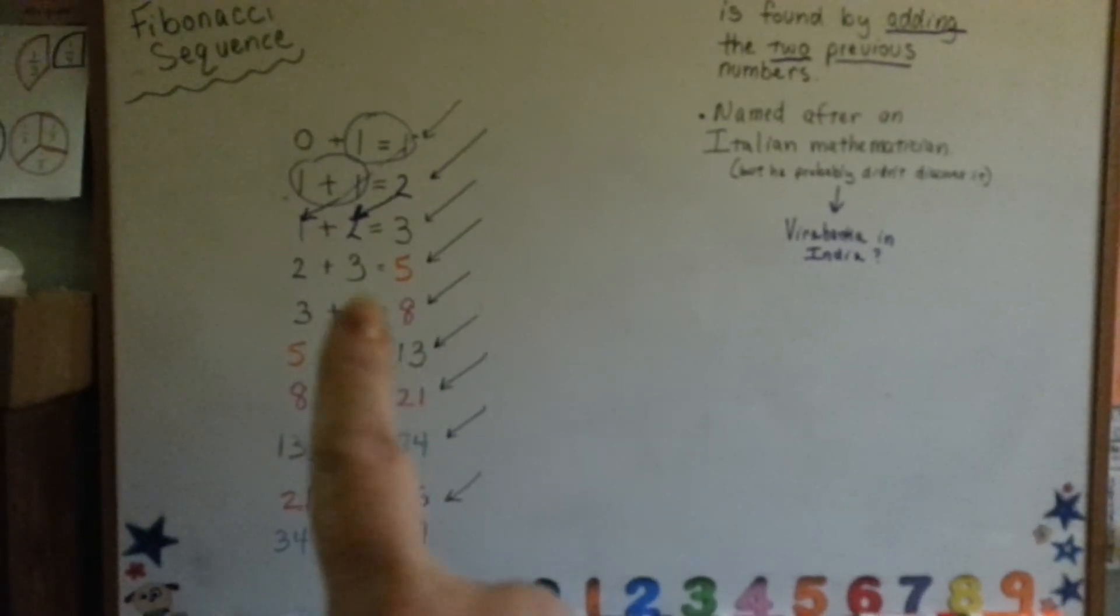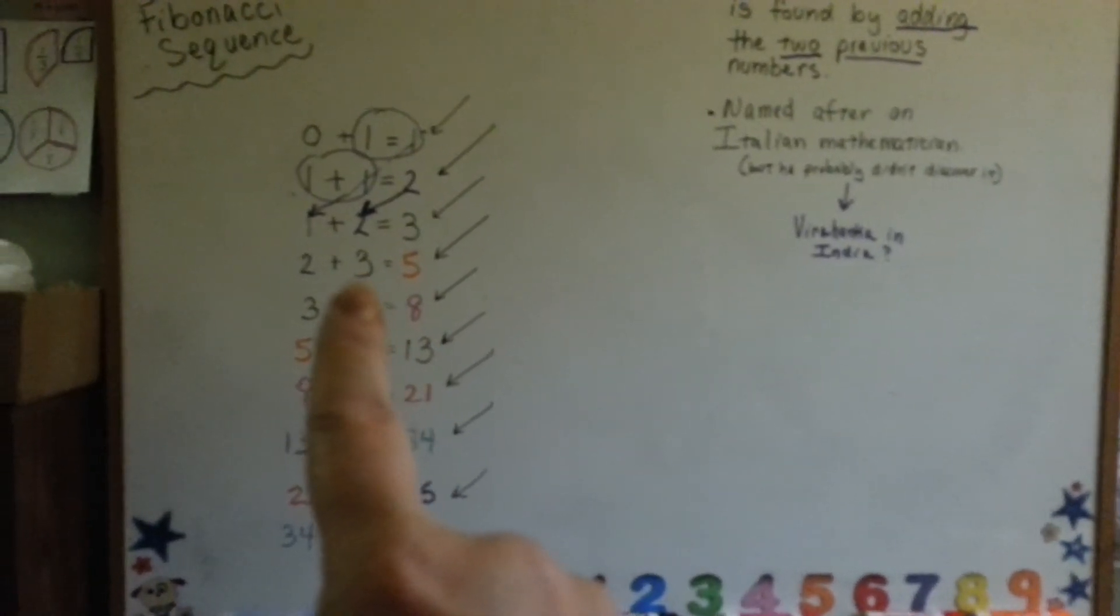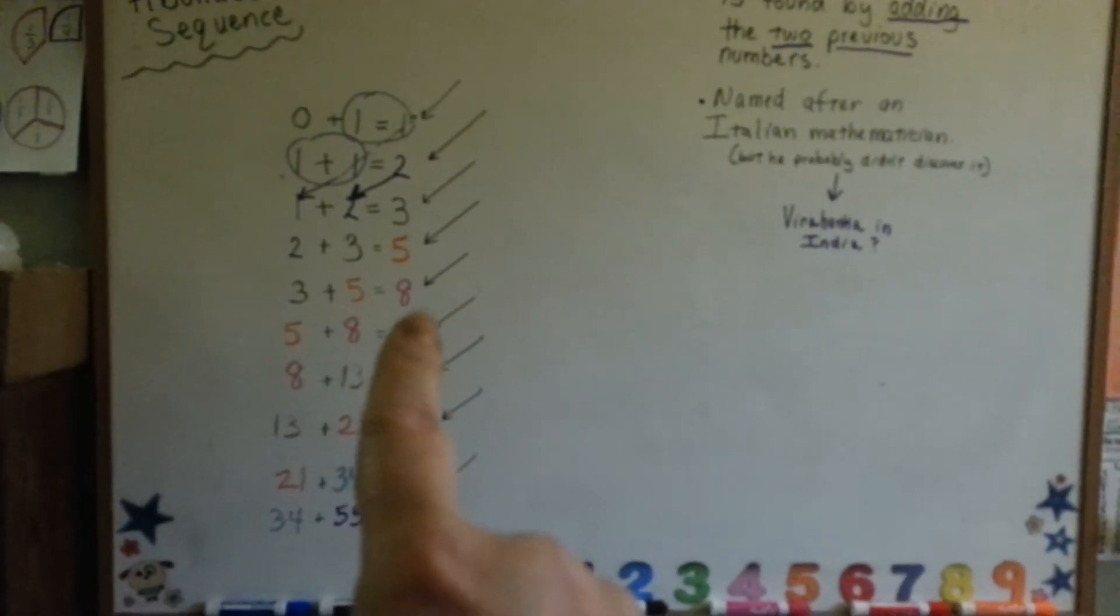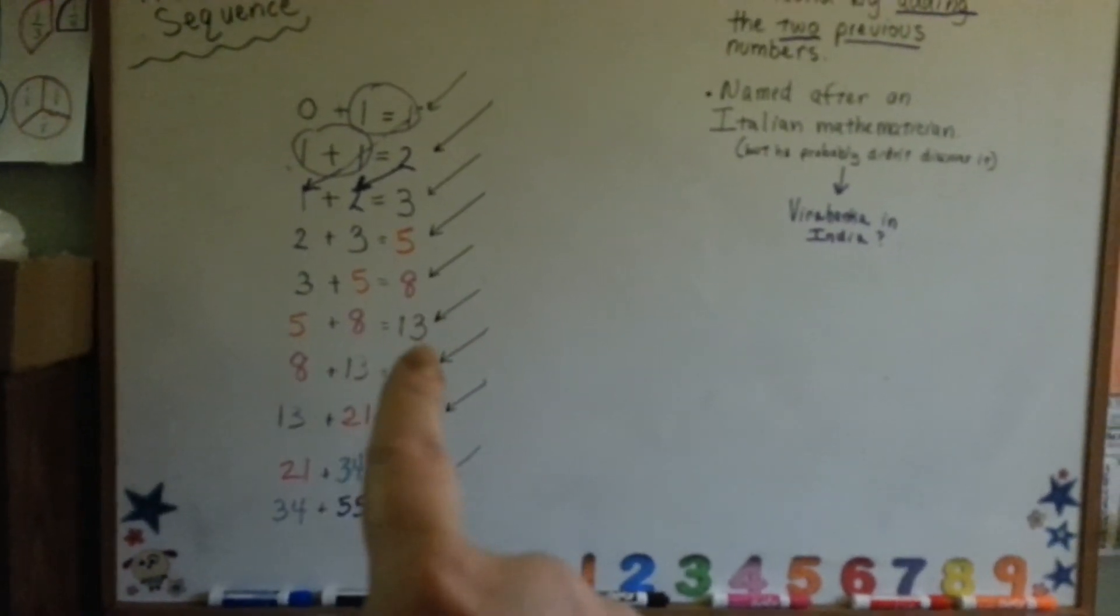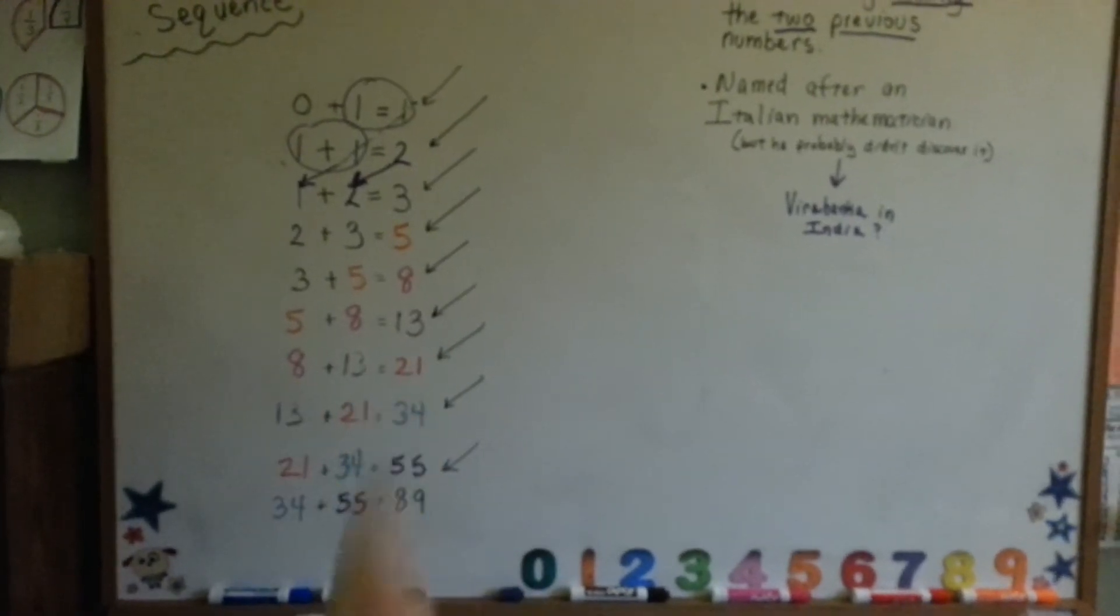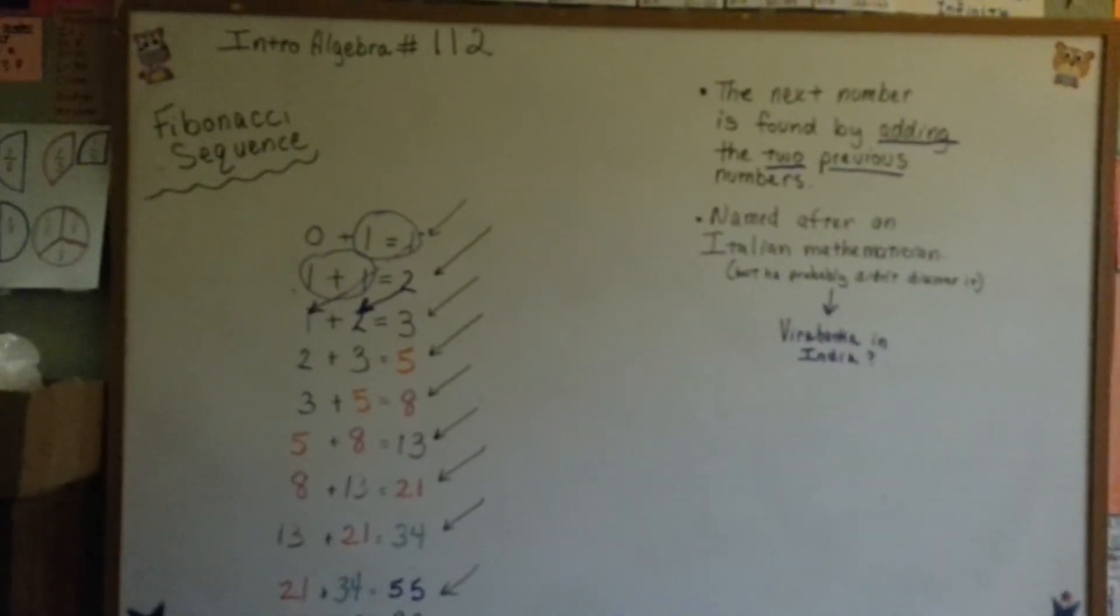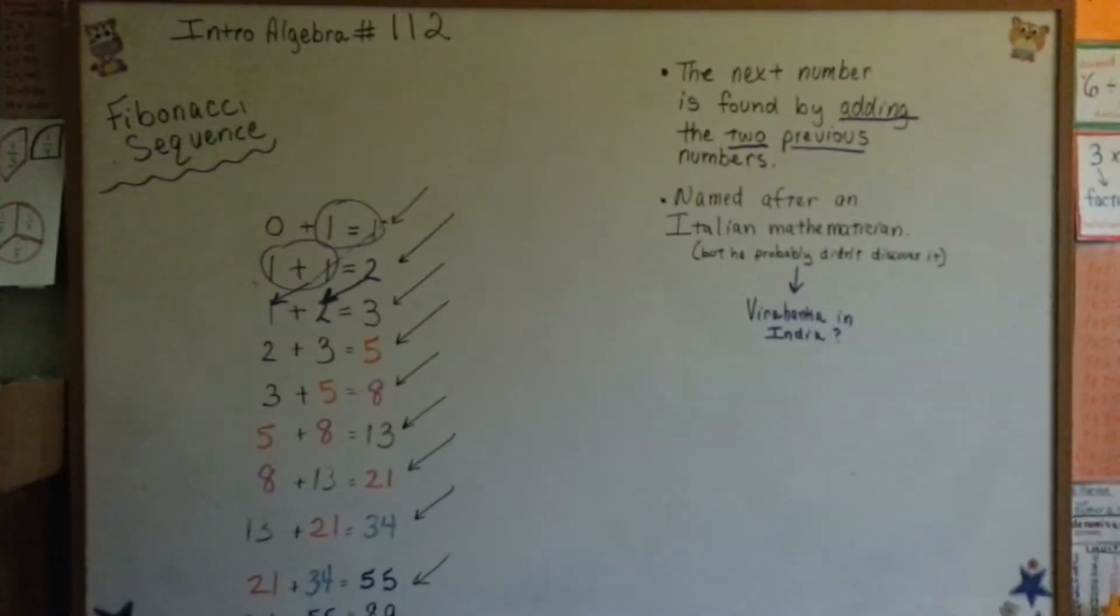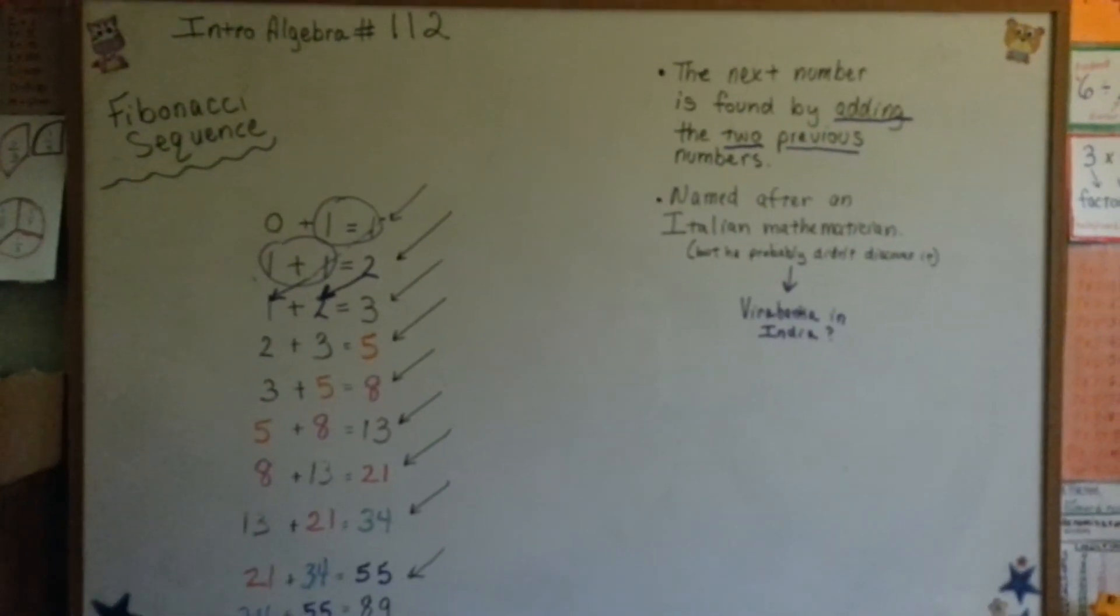So remember, you take the last 2 numbers, the addend and the sum, and add them together to get the next number. Add those 2 together to get the next one. See if you can make a Fibonacci sequence. See how far you can go. It might be kind of fun. See you next video.